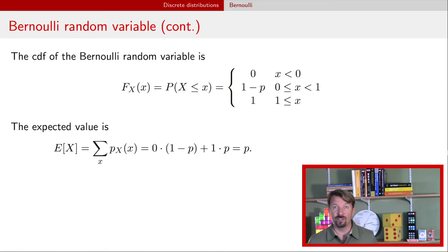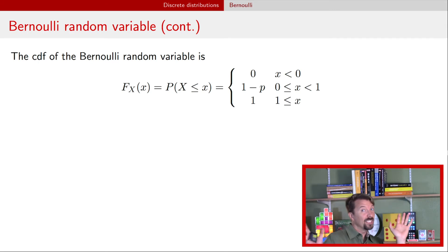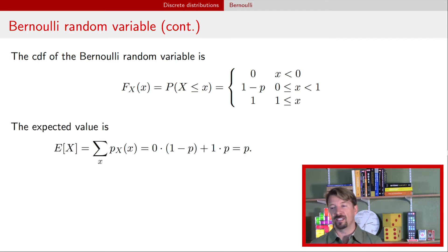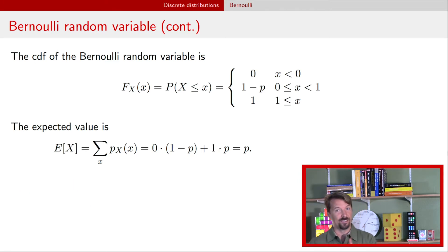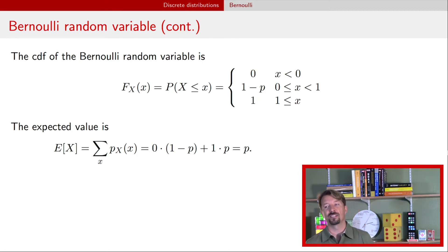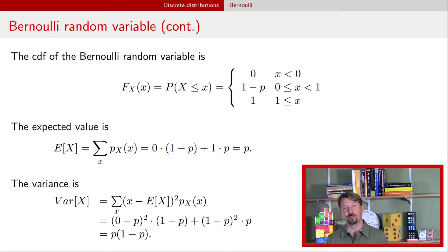You should pause right now and use the probability mass function to calculate the expected value. If we just do the math, we find that the expected value is p — but of course we already knew that because we already did that with the biased coin in the previous video. The variance turns out to be p times one minus p. And in the previous video, we talked about this being maximized at a value of p equal to 0.5.